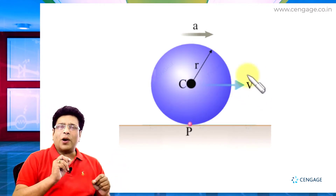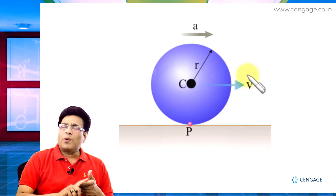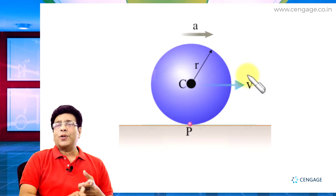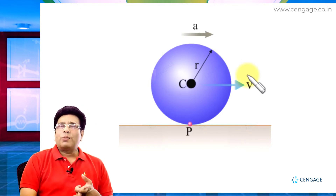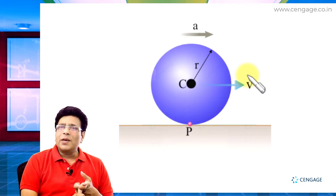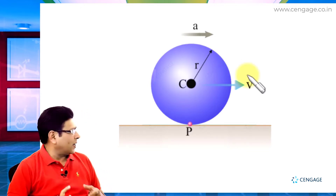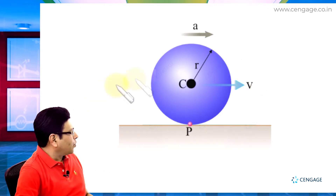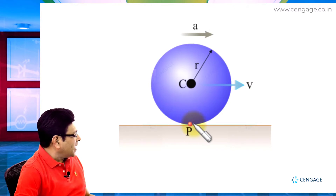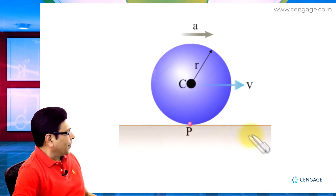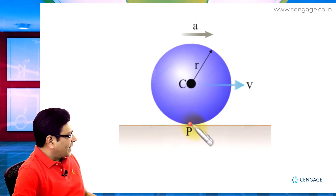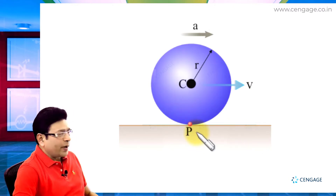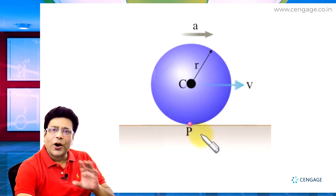Why velocity at the time of observation? Because the velocity of the centre will keep on increasing. So we need to find the acceleration of point P — that is the net acceleration of point P with respect to the ground.